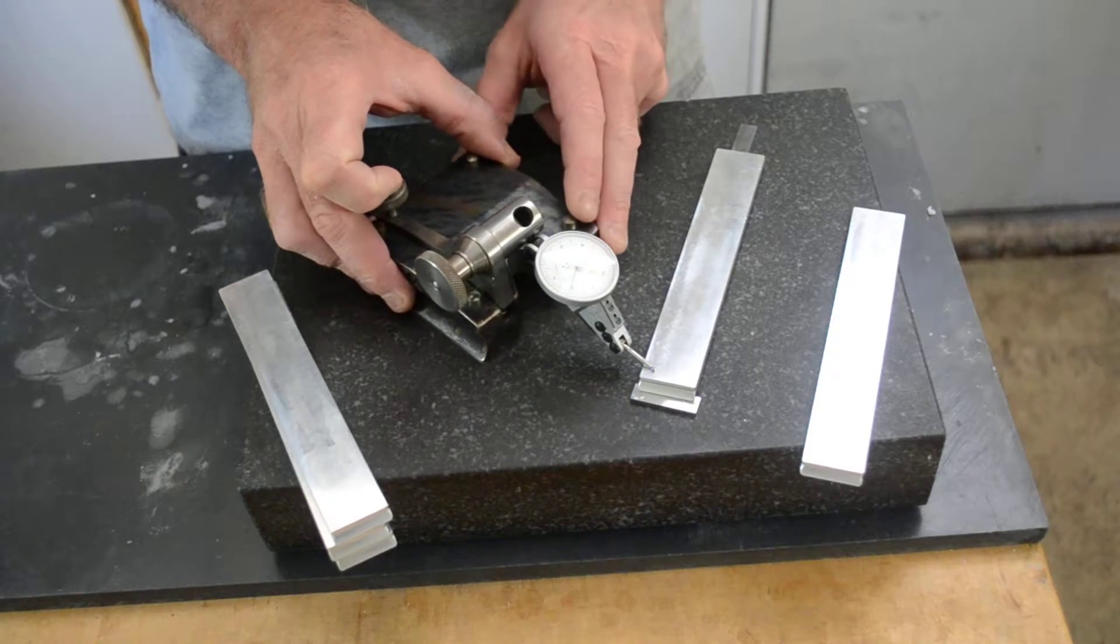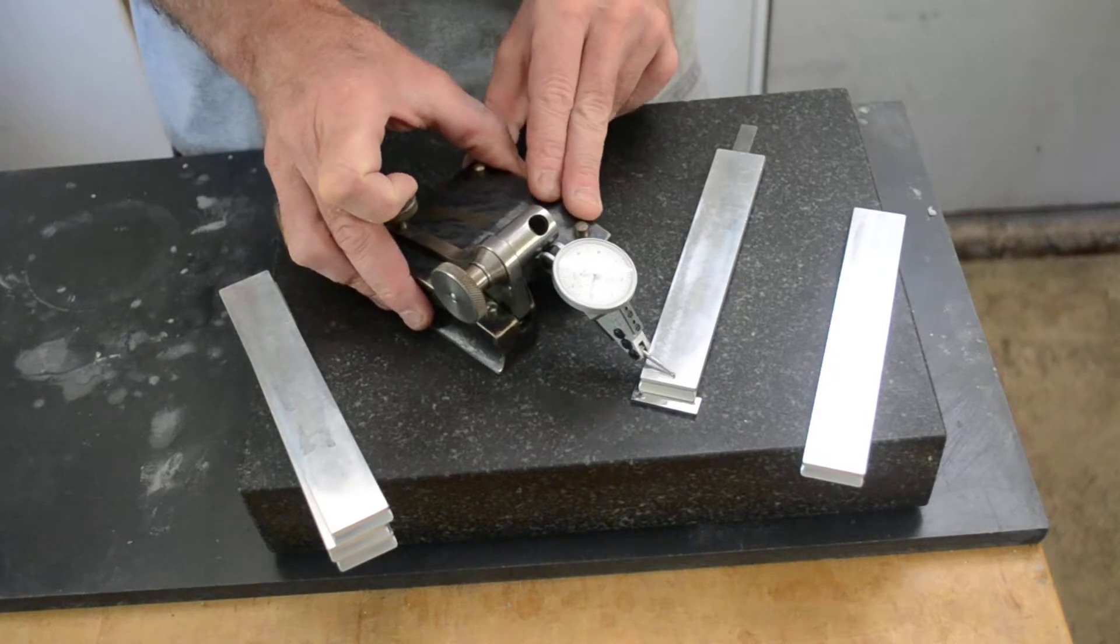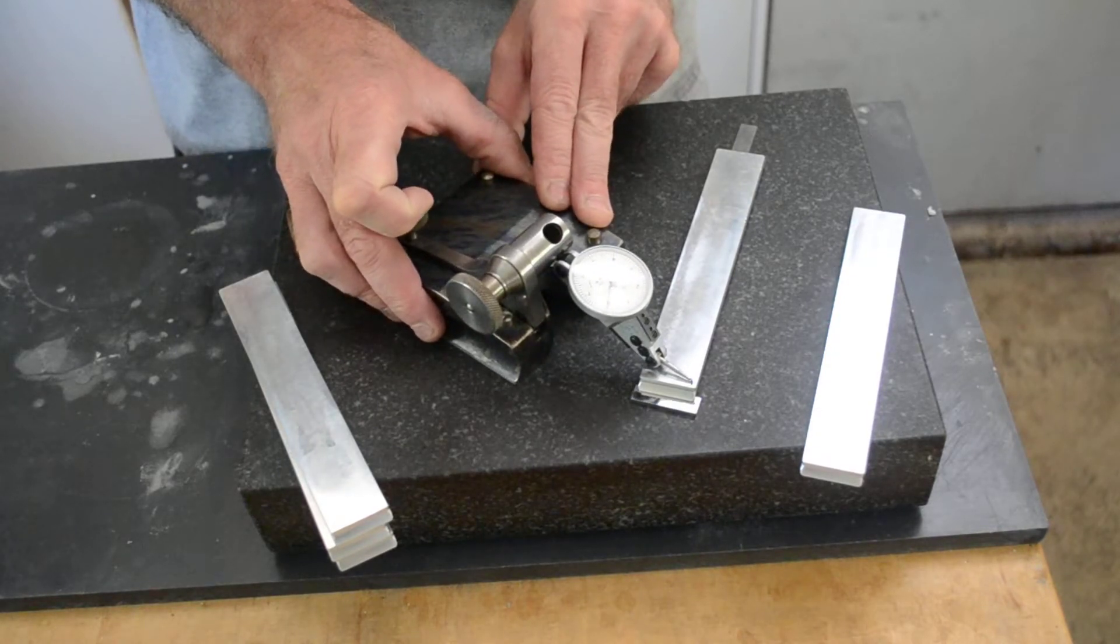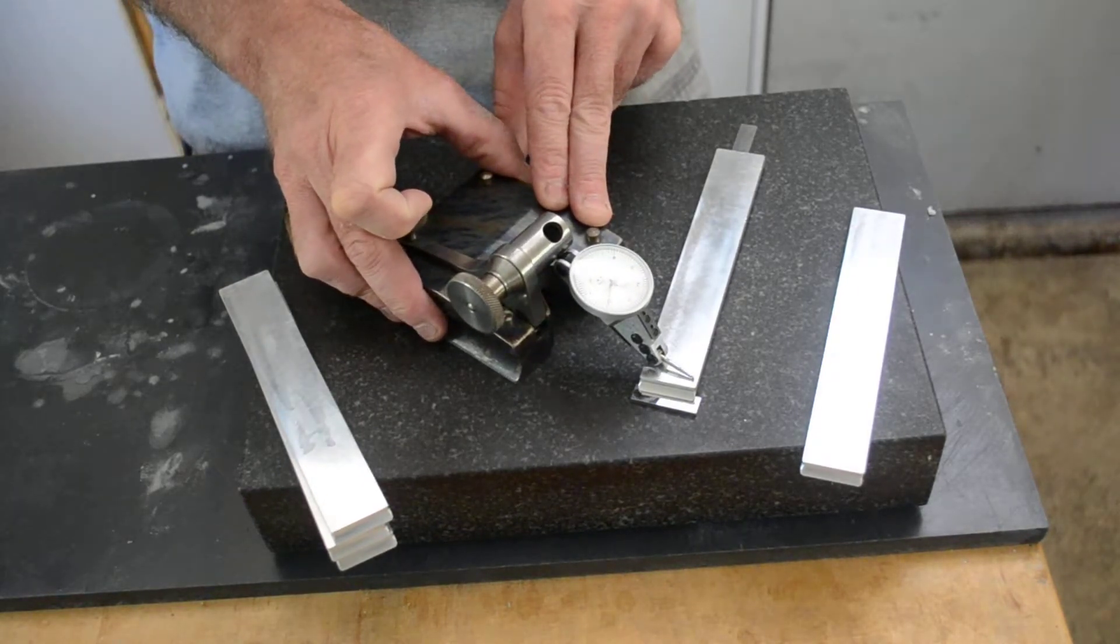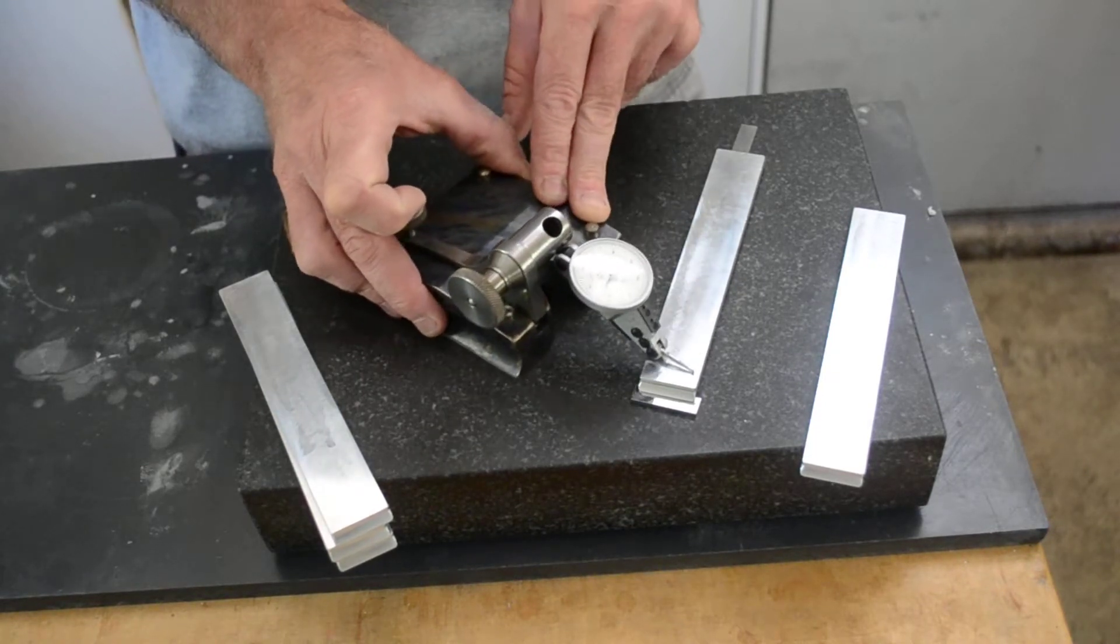The granite sitting on is a granite surface plate, just grade B. It's probably, I don't know the specs for it for this small a plate, it's probably 50 millionths overall over the entire surface.